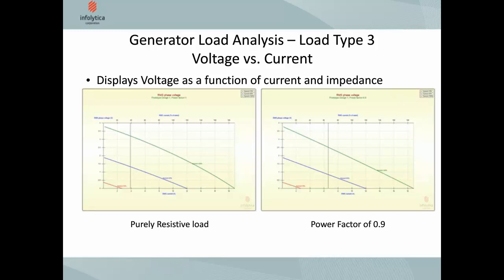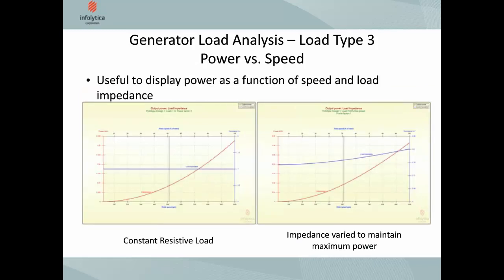The same is true for the power versus speed chart — you can do it with either a purely resistive or a reactive load. This is useful to display power as a function of speed and load impedance, where the load impedance varies along the chart and we can see how power varies accordingly.